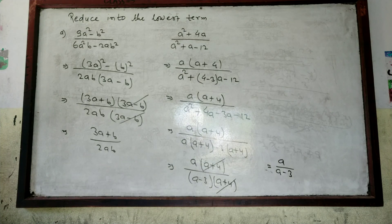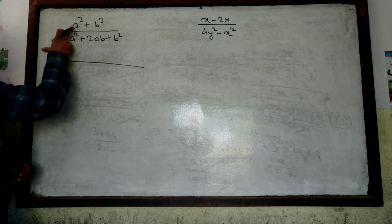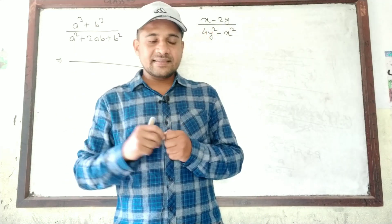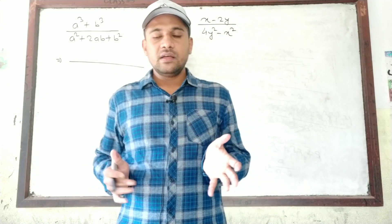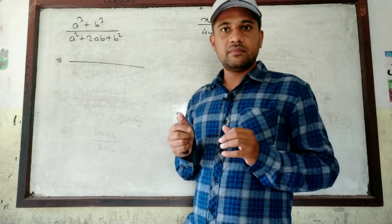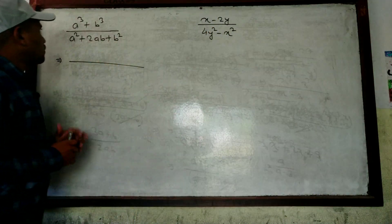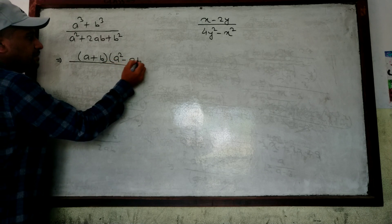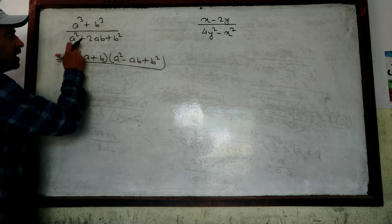Look at the next two questions on the board. This one is in the form of a³ + b³, so we have to use the formula for a³ + b³. If you don't know the algebra formulas, go to my channel playlist — there is a formula set with all algebraic formulas which is very popular on my channel. The formula for a³ + b³ is: (a+b)(a² − ab + b²).